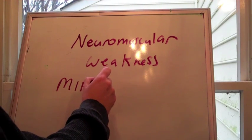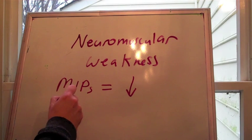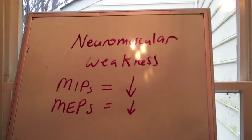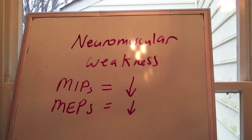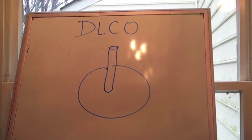Now, neuromuscular weakness, a couple other clues. Your mean inspiratory pressure, or how much air you can suck in, and your mean expiratory pressure, how much air you can blow out, are both reduced in significant neuromuscular disease, as you can imagine. So that's a clue.